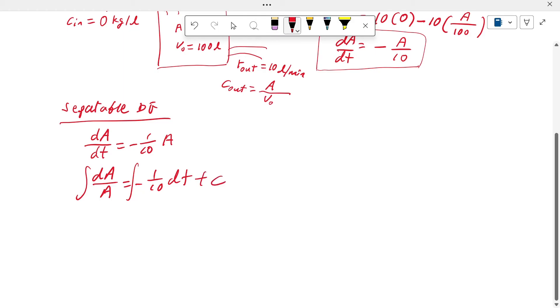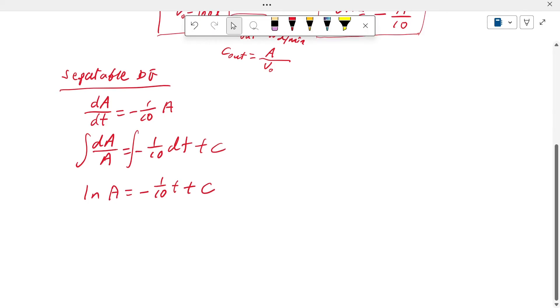Here we have C. So 1 over A is ln of A. And here is minus 1/10 of T plus C. And then we're going to take the exponential on both sides.